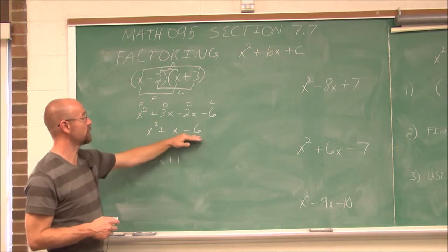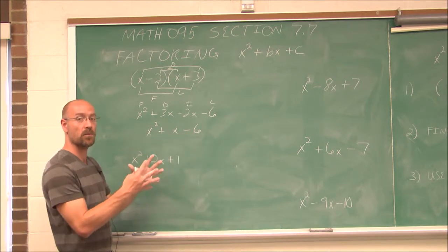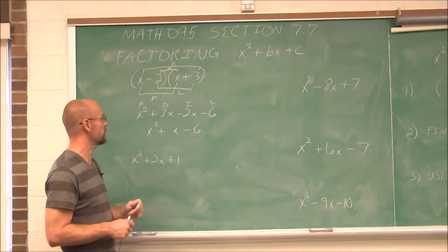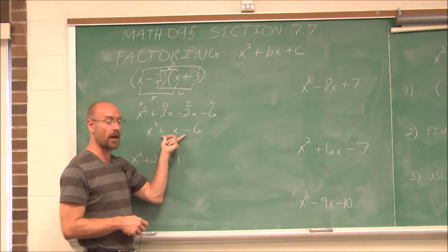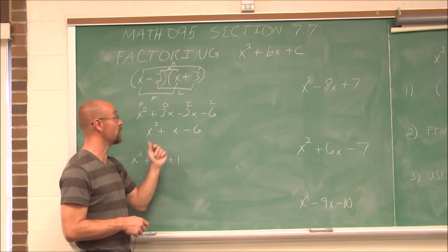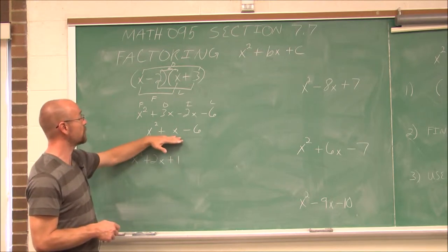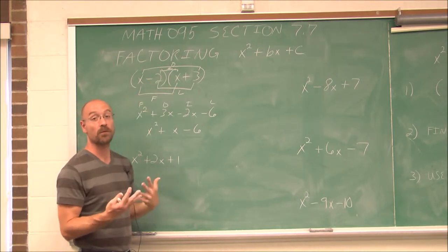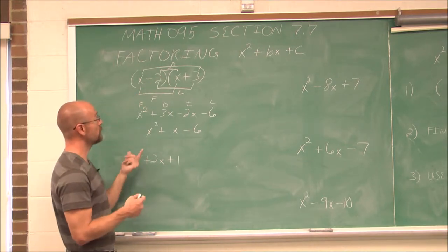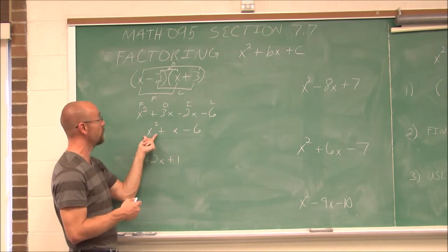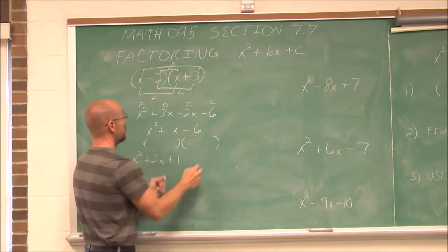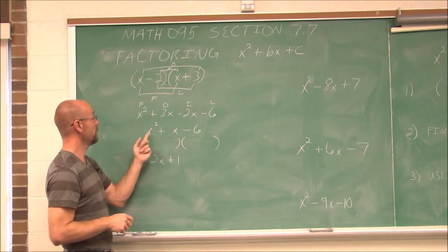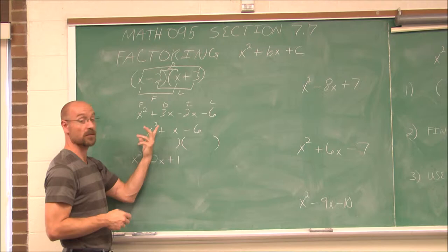What if I had this trinomial and I wanted to break it down? Just like with numbers we can write prime factorization, we can also do that with polynomials — trinomials especially. A term used is reverse FOIL. When this coefficient is 1, I know the first term is x times x — that's how we get x squared.